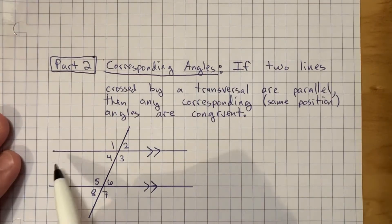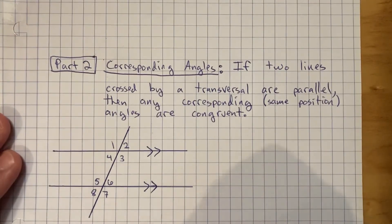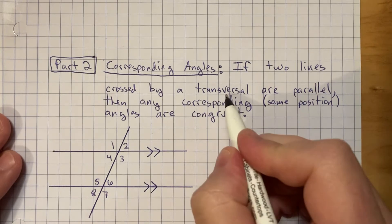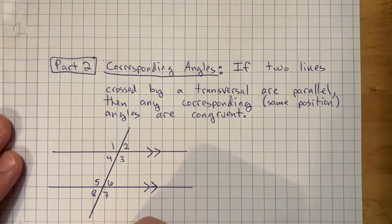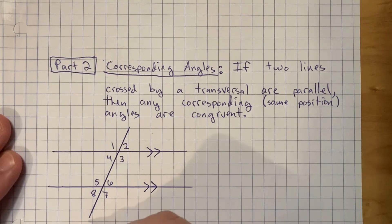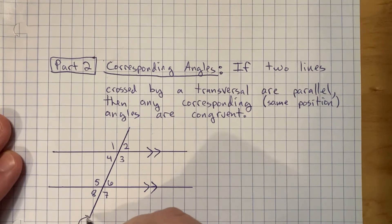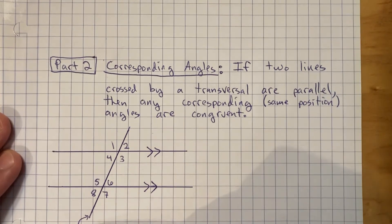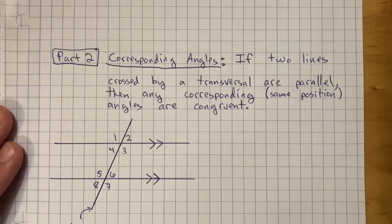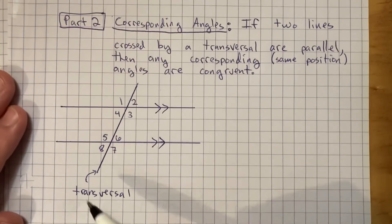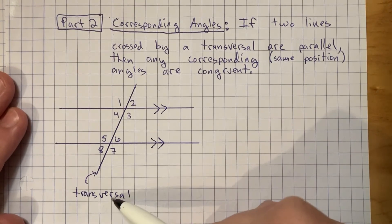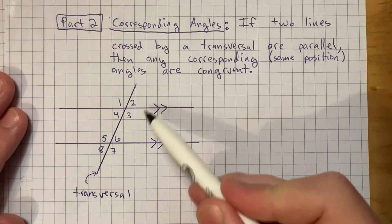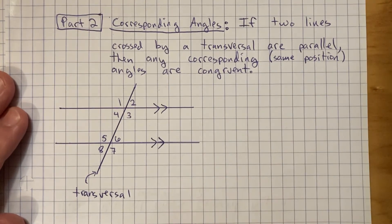We have two lines that are parallel, but that word 'transversal' you might not have seen before. The transversal in this diagram is the other line that's crossing them — it's transversing them. A transversal is a line that crosses two or more other lines.